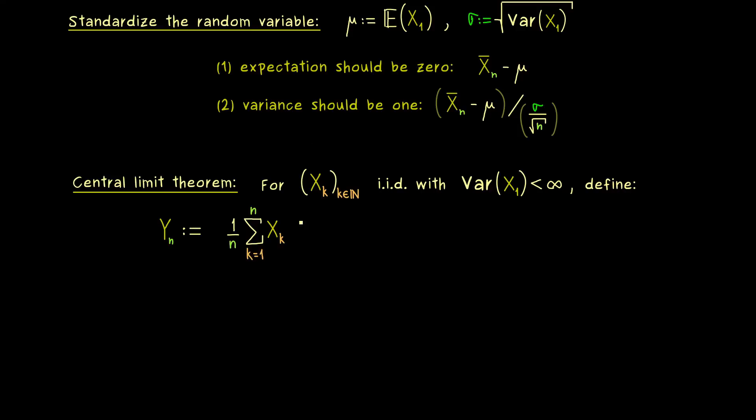And now the whole definition here tells us, we take the sum of the xk until n and divide by n, and then we subtract mu. And then we multiply with the correct scaling factor, which is the inverse of sigma divided by the square root of n. So here please check that this random variable always has variance equal to 1.